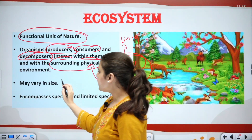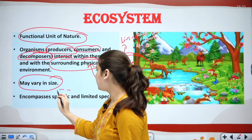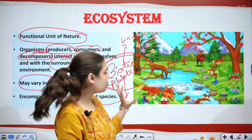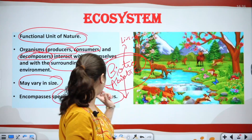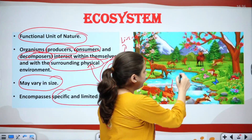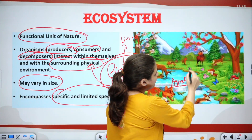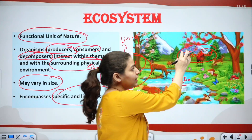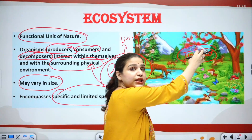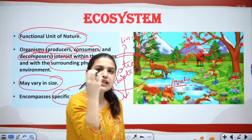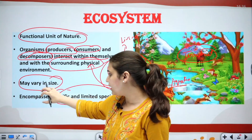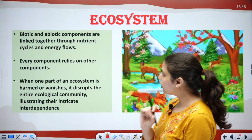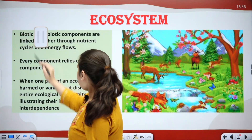This ecosystem may vary in size and may encompass specific and limited species. For example, a river is our aquatic ecosystem and land is our terrestrial ecosystem. They may vary in size — the aquatic ecosystem may be big, the terrestrial ecosystem may be small — but there may be more species in the terrestrial ecosystem and very limited species in the aquatic ecosystem.